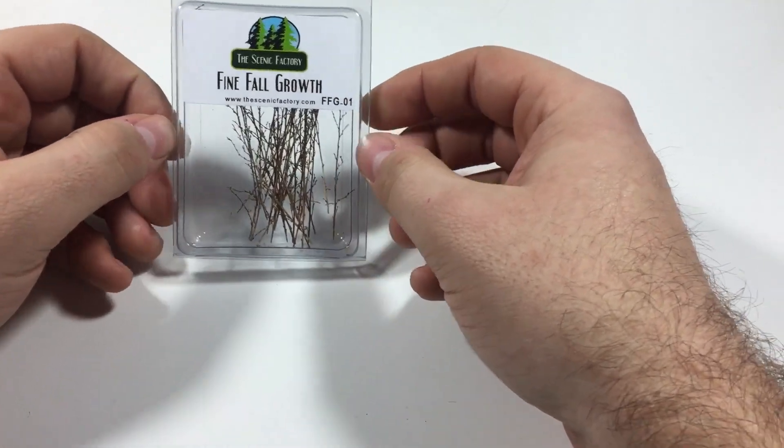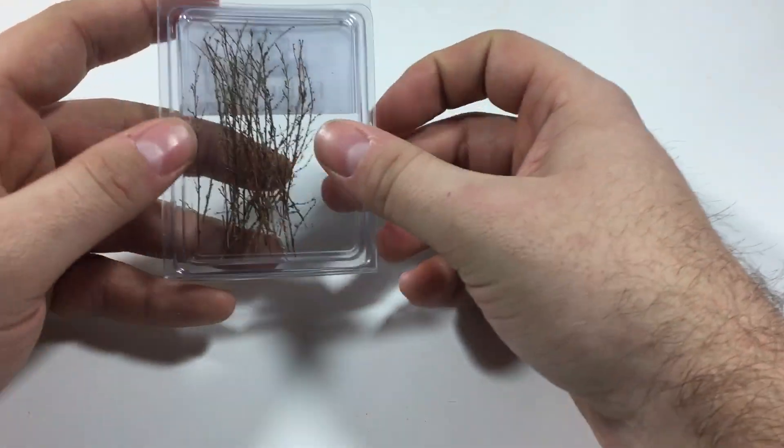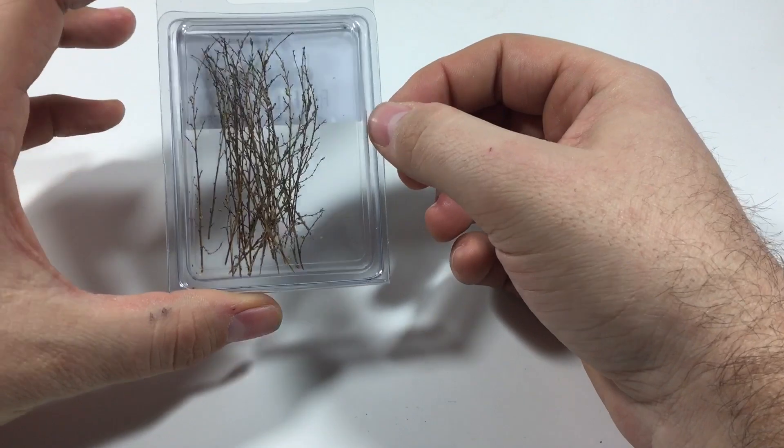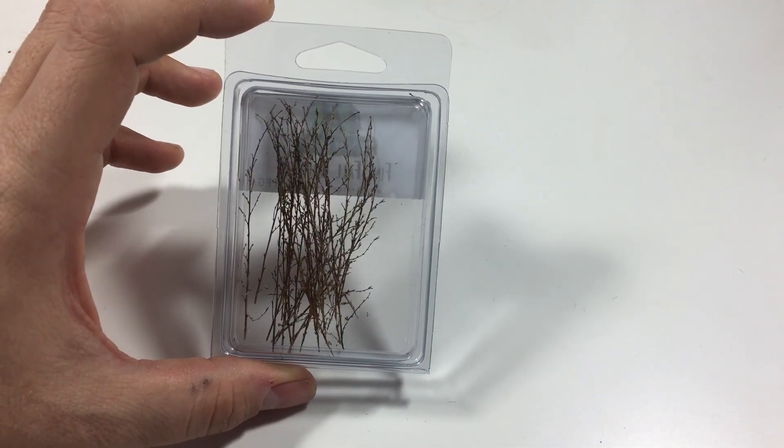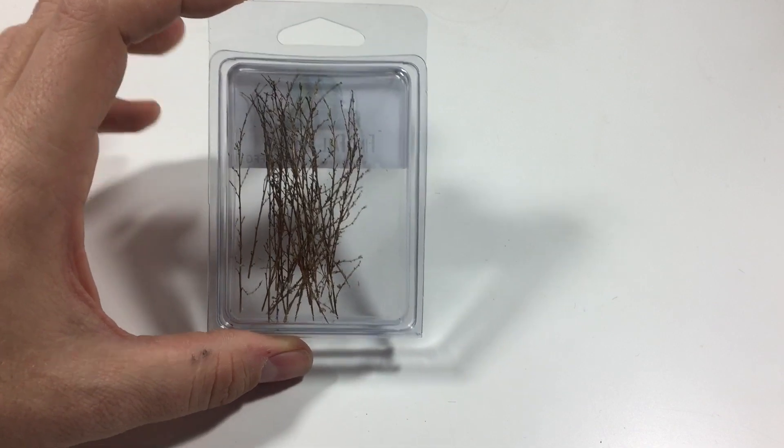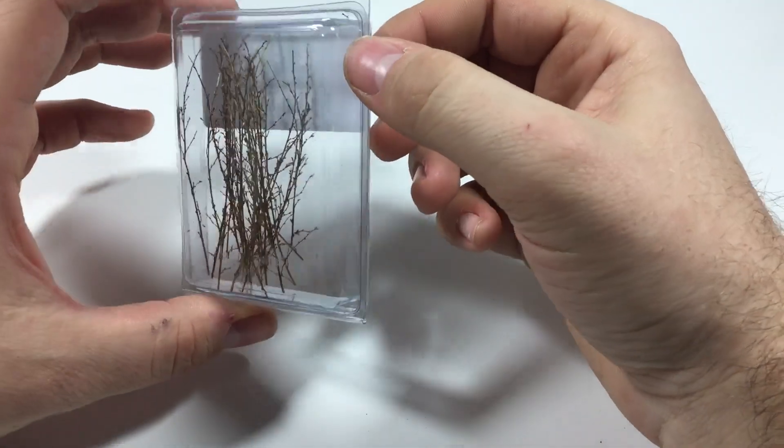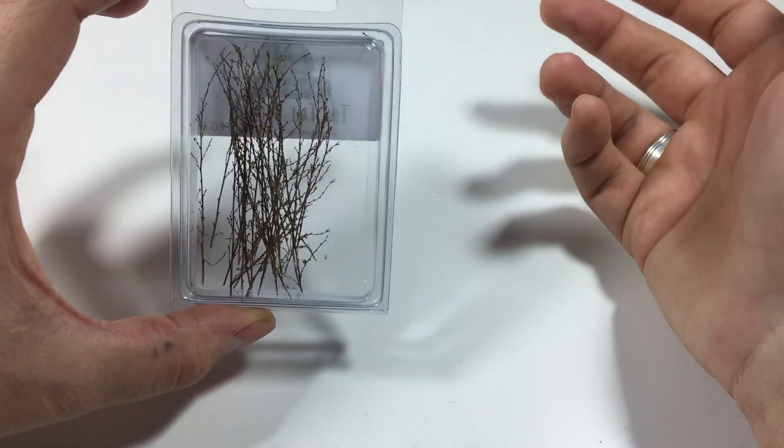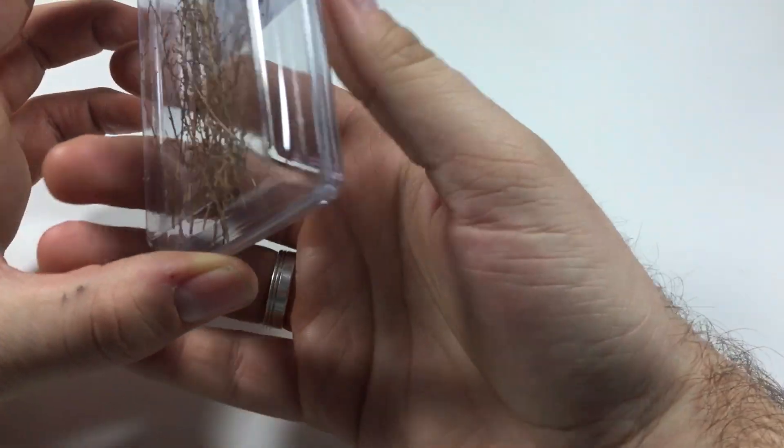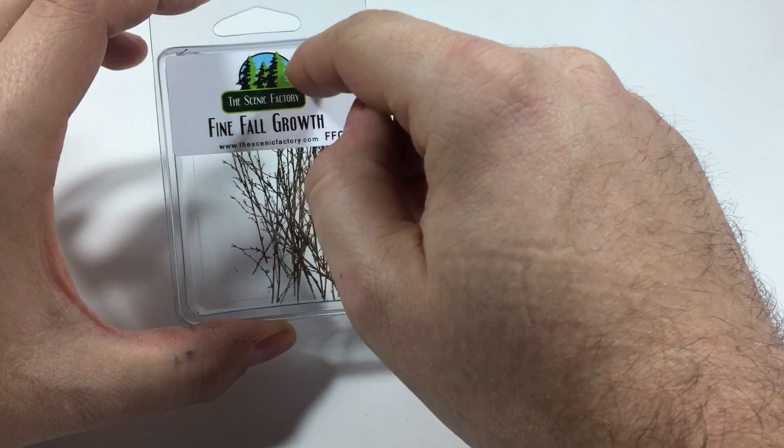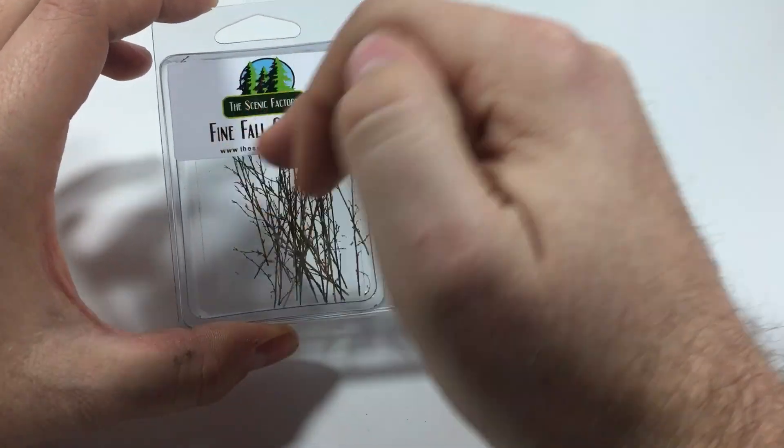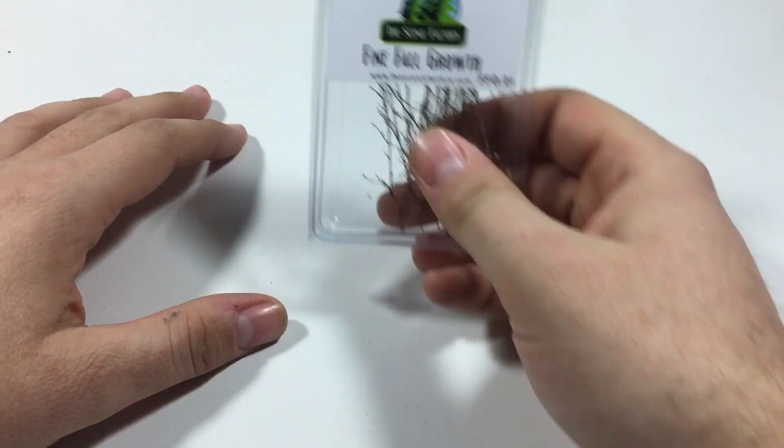Next up is something similar to the saplings, it's fine fall growth. I think it has a bit more richness to it than the saplings when it comes to branch material on it, and it will serve a similar purpose. I like that the Scenic Factory product always tells you what it is, and that's cool.